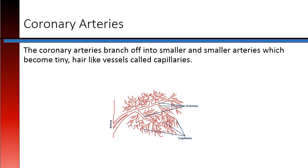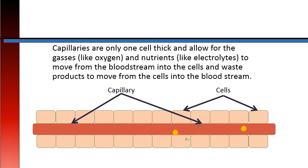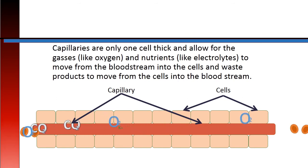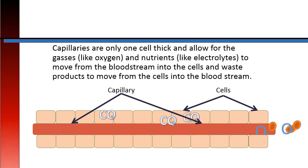The coronary arteries branch off into smaller and smaller arteries, which become tiny, hair-like vessels called capillaries. Capillaries are only one cell thick, and allow for gases like oxygen and nutrients like electrolytes to move from the bloodstream into the cells, and waste products to move from the cells into the bloodstream.